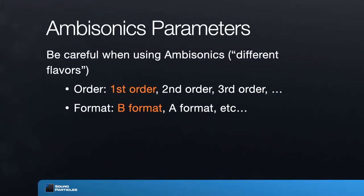The second consideration is the format: is it A format or B format? A format is the direct recording of the four capsules of the tetrahedral microphone. B format has already been converted to omni and three figure-of-eights. B format is the way most ambisonics plugins work — they expect to receive B format. So try to convert recordings to B format, since most plugins expect it. Note that both A and B format have four channels for first-order ambisonics.